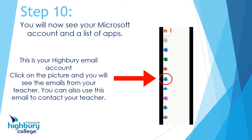After you've put the code in, you should now get to your Microsoft account. You'll see a lot of little pictures on the side of the page. Click on the one that looks like an 'O' — that's your Outlook, your emails. When you open that, you will get emails from your teacher and you can send your teacher emails too.